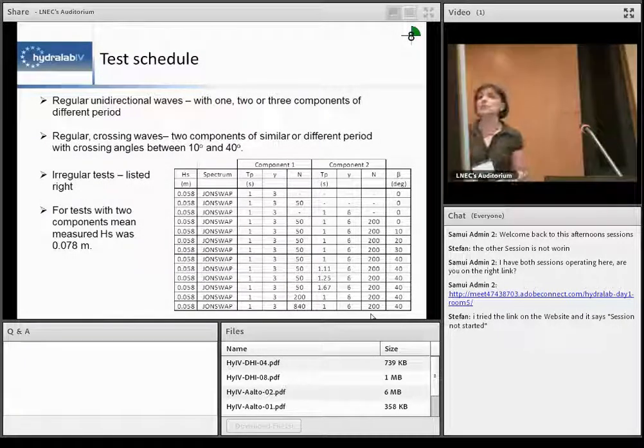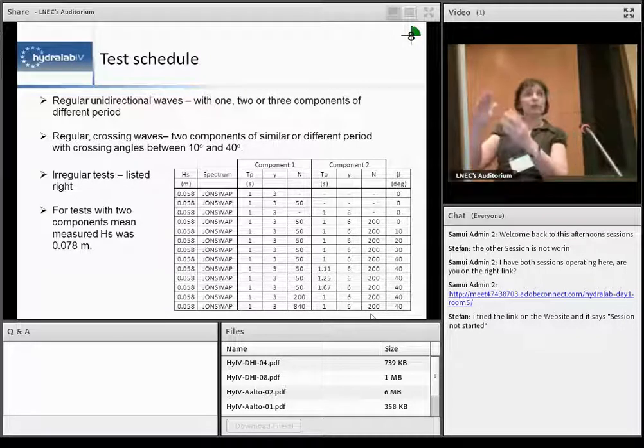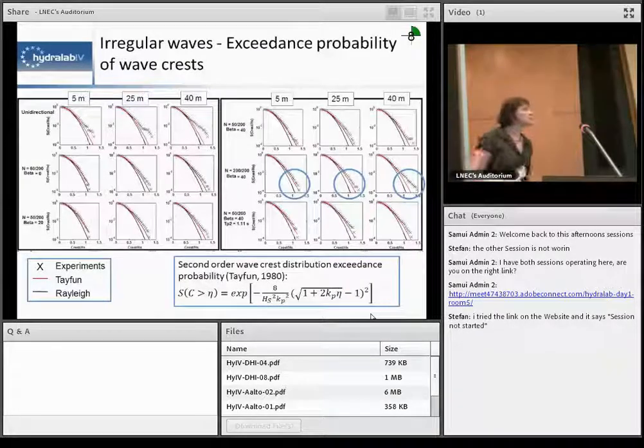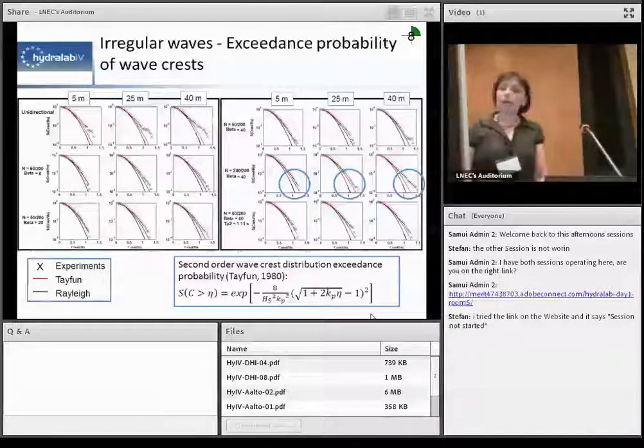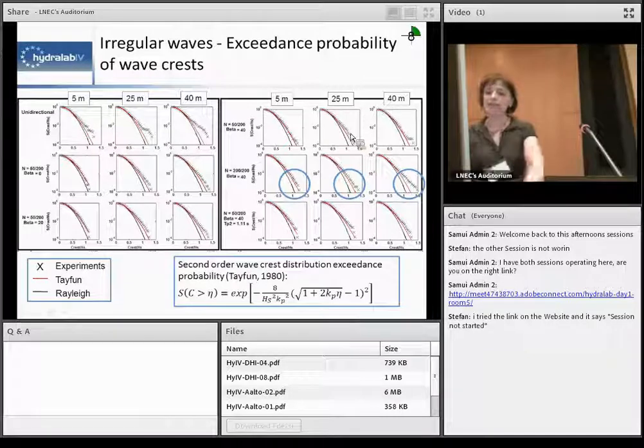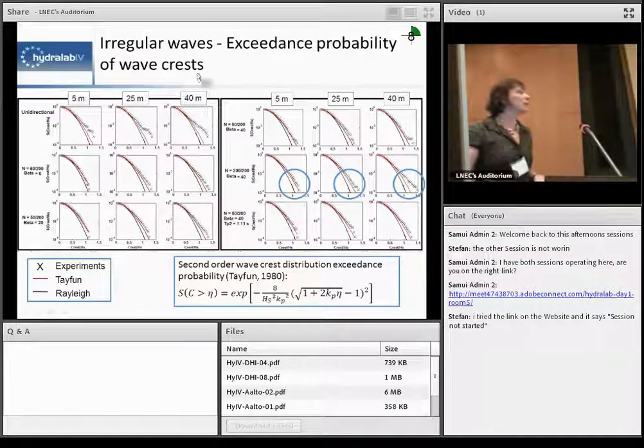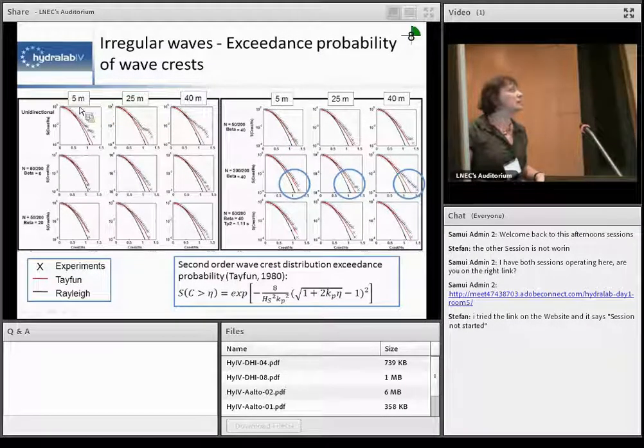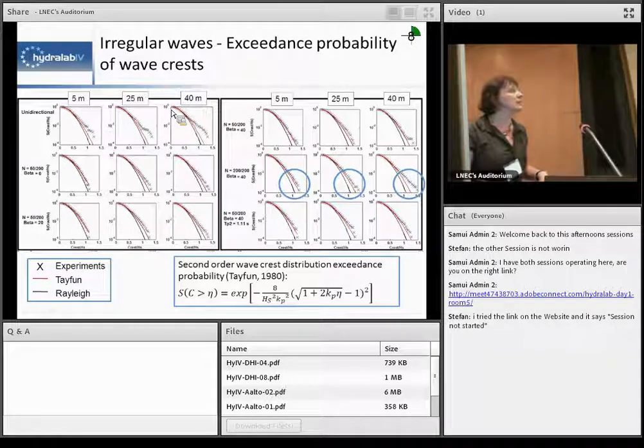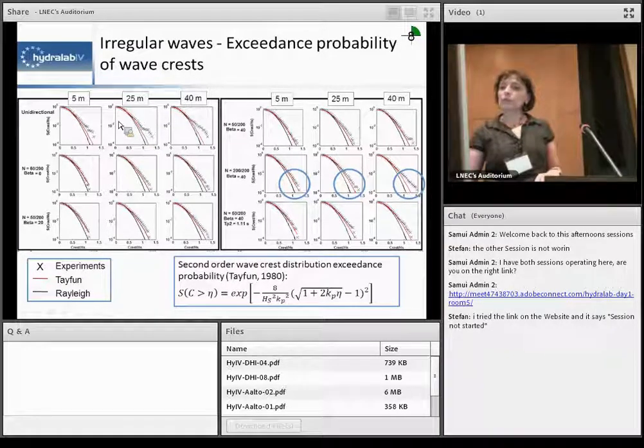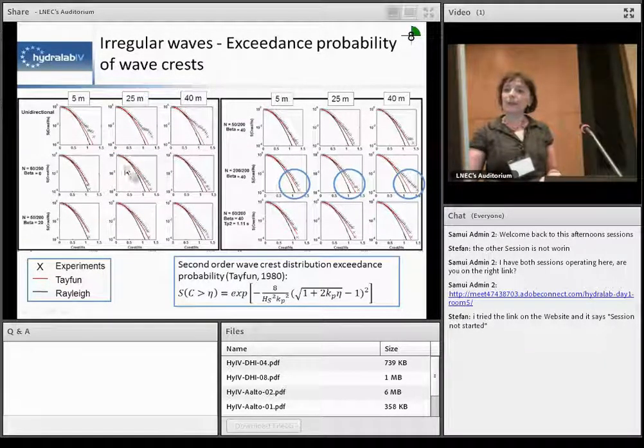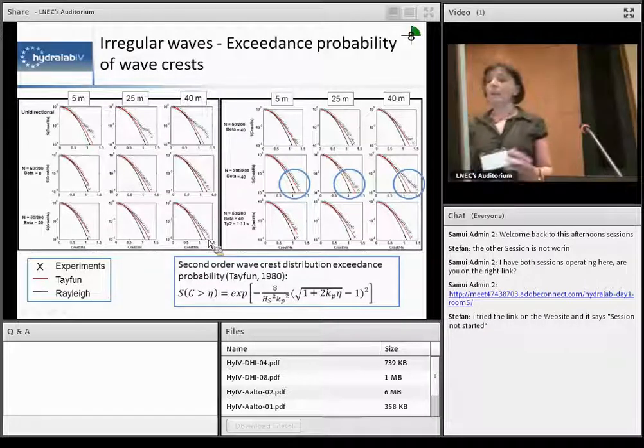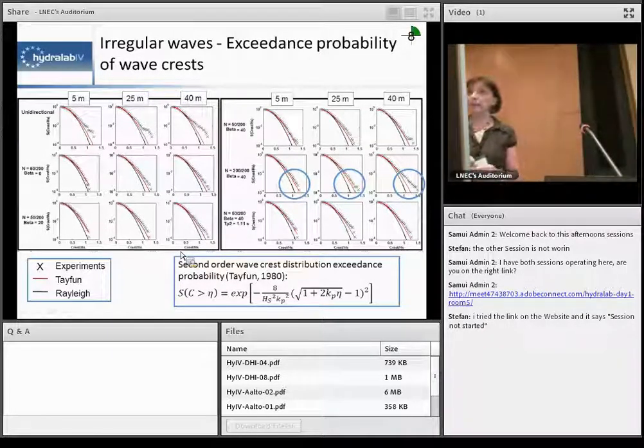So let's look at some of the results from those irregular tests. And so first we look at the exceedance probability of wave crests at different locations across the basin. So this is about three wavelengths. This is about 16 and 20 wavelengths from the paddles. With those crosses are measurements and with the black line is Rayleigh distribution and with the red one is Tayfun distribution which is based on second order theory. And we'll look at here deviations, unidirectional case. So this is just kind of almost like unidirectional because it's zero between two waves. But it's just much steeper.